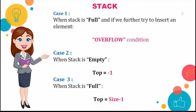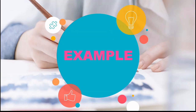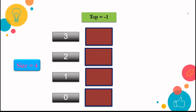Now let's understand the push operation in stack with the help of an example. We have a stack whose size is four. So the first index is zero and the last index is size minus one, which is four minus one, that is three. These blocks are empty because there is no element in the stack. In that case, as discussed, the top will be minus one, because when the stack is empty, top points to minus one.